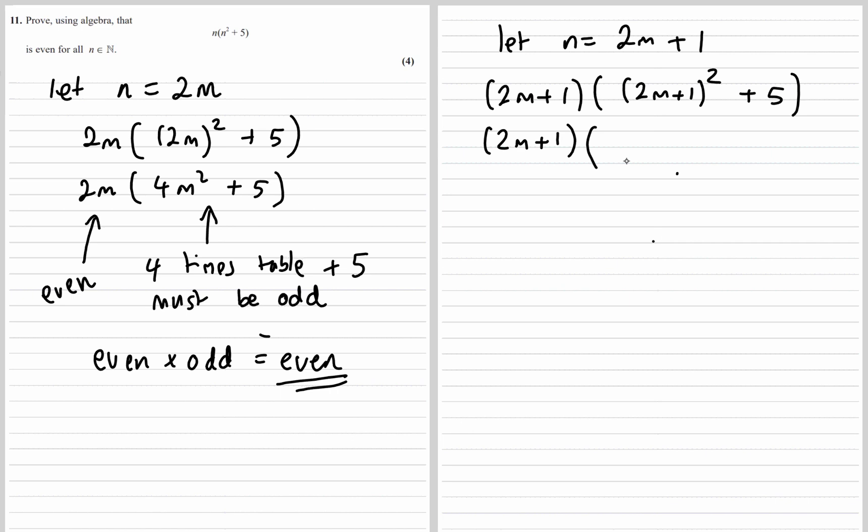Expanding 2m plus 1, so 2m plus 1 times 2m plus 1 will be 4m squared plus 2m plus 2m plus 1. Then we just need to collect the like terms. We've got 4m squared, we've got 4m, and we've got 6.